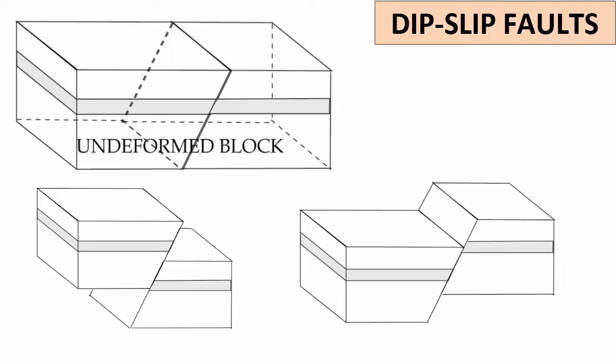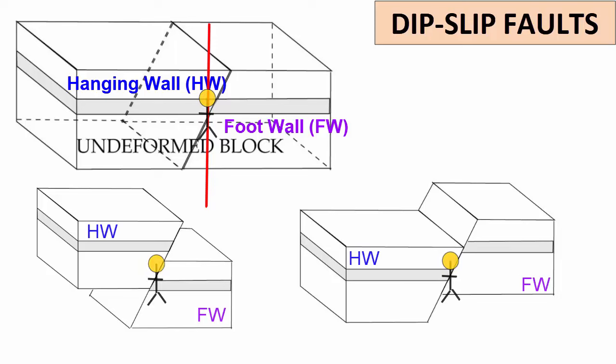For dip-slip faults, the top surface of the fault is the hanging wall. Think of this as the block of rock that is hanging over the fault surface. The bottom surface of the fault is the foot wall. Draw a vertical line anywhere along the cross section of a fault plane, and the hanging wall rocks will be sitting on top of the foot wall rocks. If you draw a person standing upright, their head is in the hanging wall, and their feet in the foot wall.